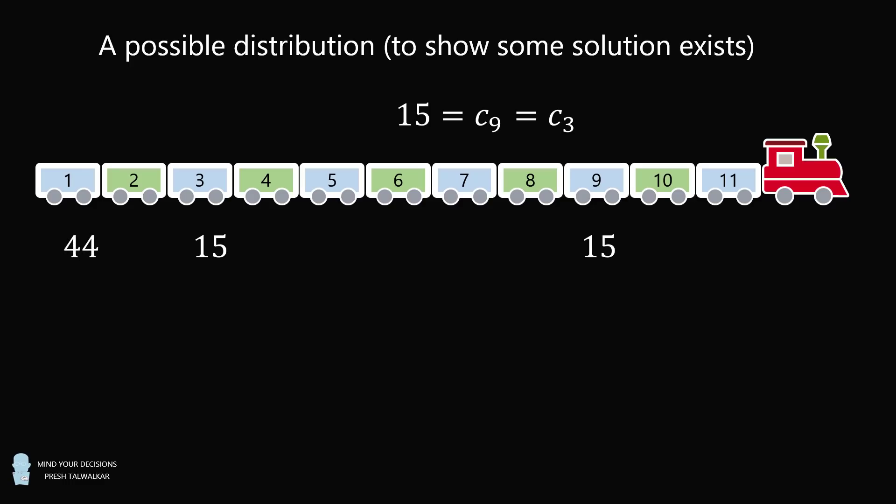Let's say that C1 = 44. Because any three passenger carriages have to have exactly 99 passengers, that means C2 = 40. From there, we can just repeat this pattern: 44, 40, 15, 44, 40, 15. And finally, we have 44 and 40.